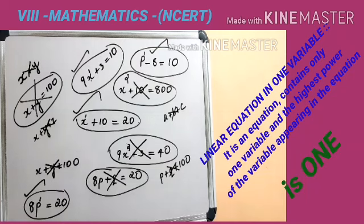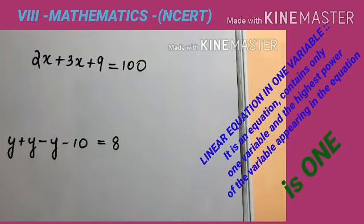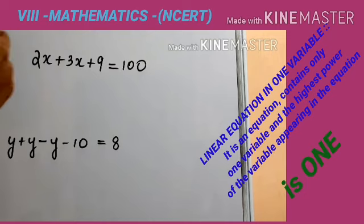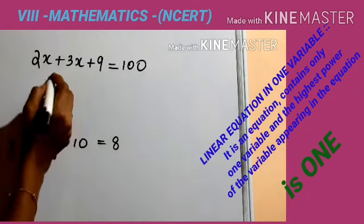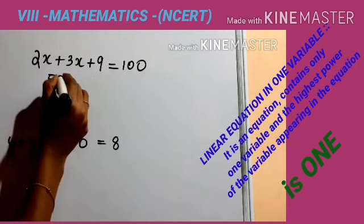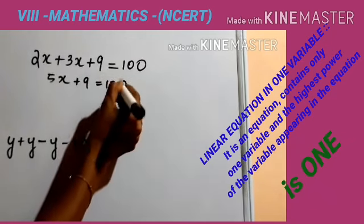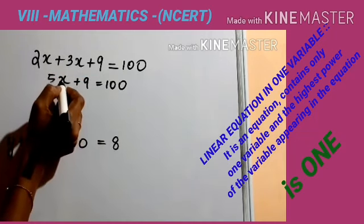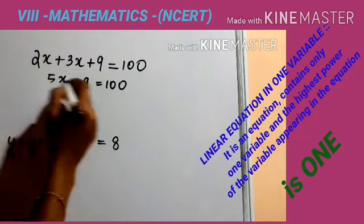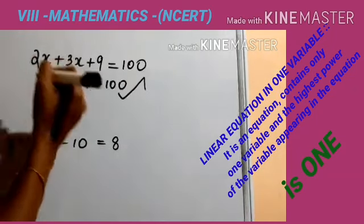Have you got linear equations in one variable? Let me ask you a question. What about these two equations — are they linear equations in one variable? Yes, these two are examples for linear equations in one variable. Why? We can write it as 2x plus 3x, which equals 5x plus 9 equals 100. Only one variable here and its power is 1, so this is an example for a linear equation in one variable.